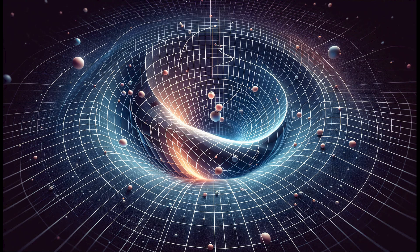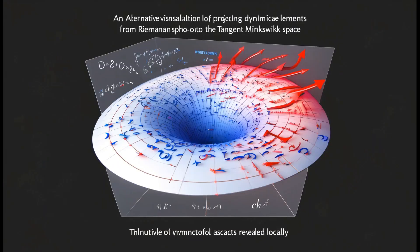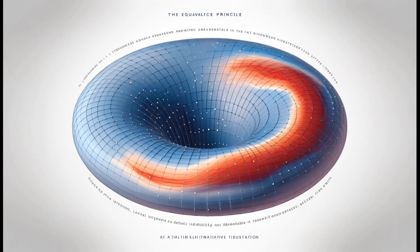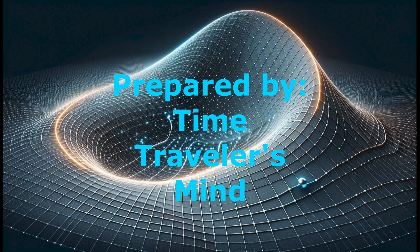The description of events in terms of a four-dimensional Riemannian spacetime scheme, based on the principles of general relativity, reduces physics to geometry by replacing dynamical elements with geometry. This perspective not only provides a deep understanding of gravitational interactions, but also emphasizes the geometric nature of the universe as predicted by general relativity.